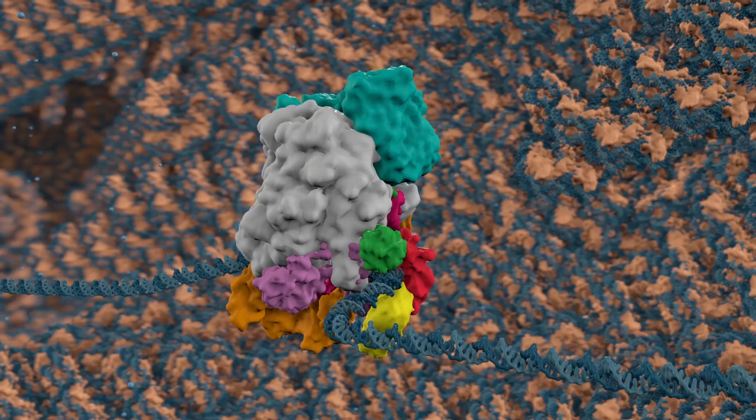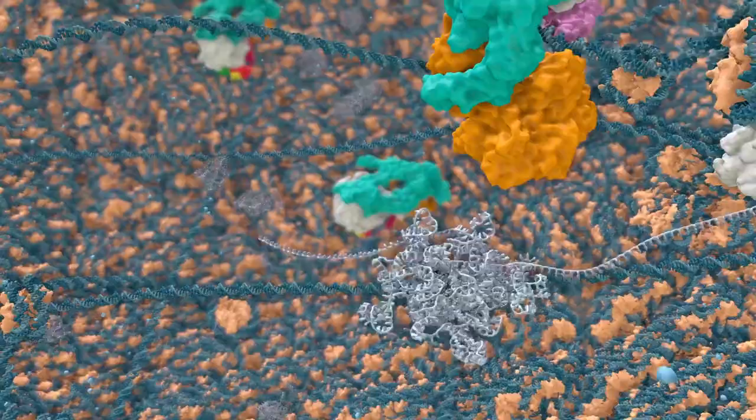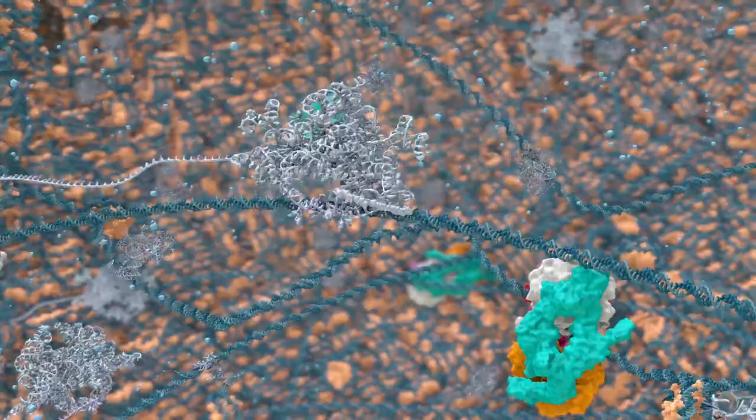POL2 produces the nascent RNA, and many factors regulate the processivity and fidelity of transcribing POL2. In the nucleus, thousands of genes are transcribed simultaneously. The complex mix of transcripts is distinct for each cell type and cell state.